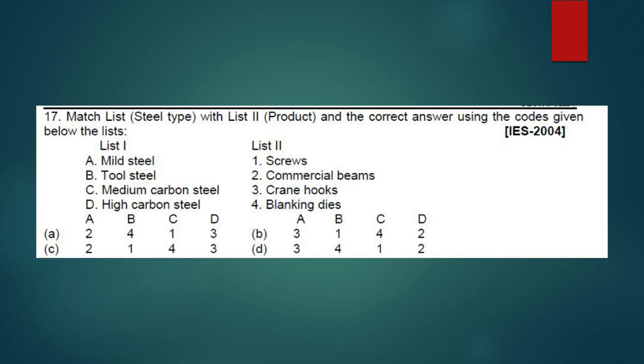So A with 3, B with 4. You can cut A with 2, so cut option A. Here also 2, you can cut C. B with 4, here B with 1, so cut B also. D is your answer: A with 3, B with 4, C with 1 medium carbon steel screws correct, high carbon steel commercial beams, D with 2. So D is the correct answer.